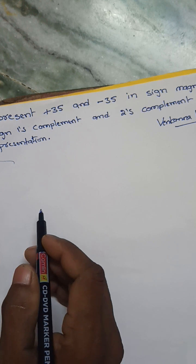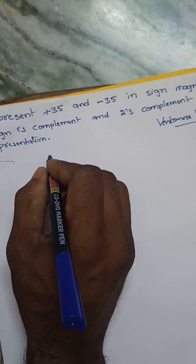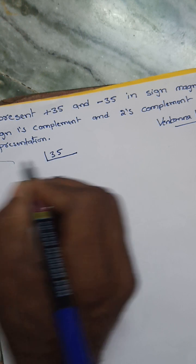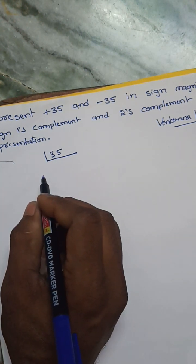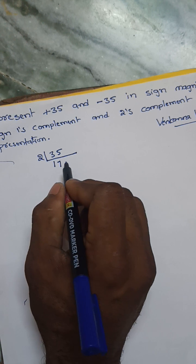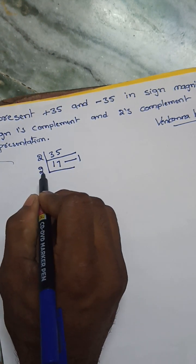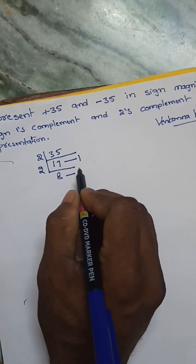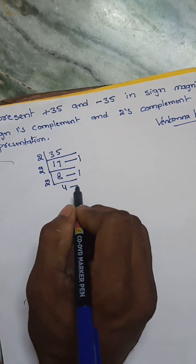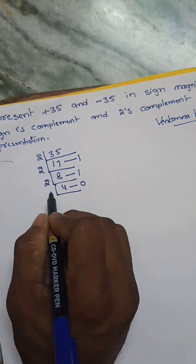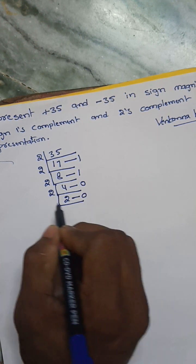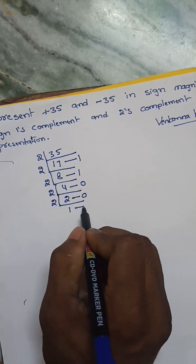First of all, we have to find the binary representation for 35. Binary means base 2. So 35 divided by 2: 17 twos are 34, remainder 1. Next, 17 divided by 2: 4 twos are 8 — wait, 8 twos are 16, remainder 1. Next, divided by 2, remainder 0. Next divided by 2, remainder 0. Next, 2 ones are 2, remainder 0.